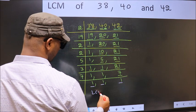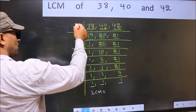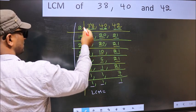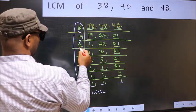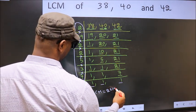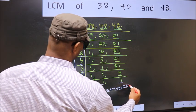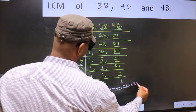So our LCM is, LCM is the product of these numbers. That is 2 into 19, into 2, into 2, into 5, into 3, into 7.